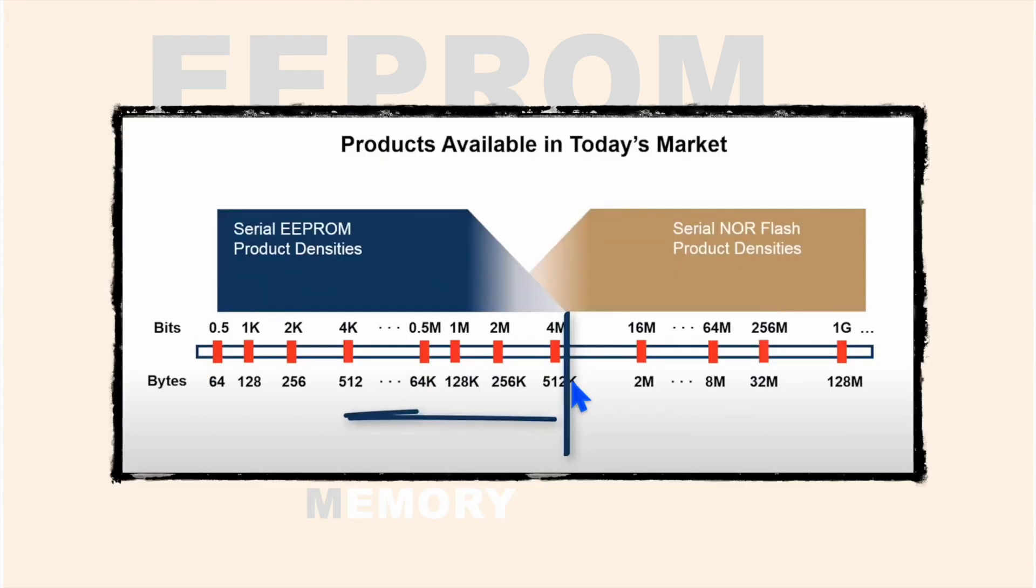And if you see the memory sizes available in the market, these EEPROMs are available from 64 bits to 512 kilobits. Since these EEPROMs are comparatively much costlier as they use an extra bit in every cell, they are available in small sizes. And wherever we need higher capacity memory, we use these NOR flash products which are available in megabits.